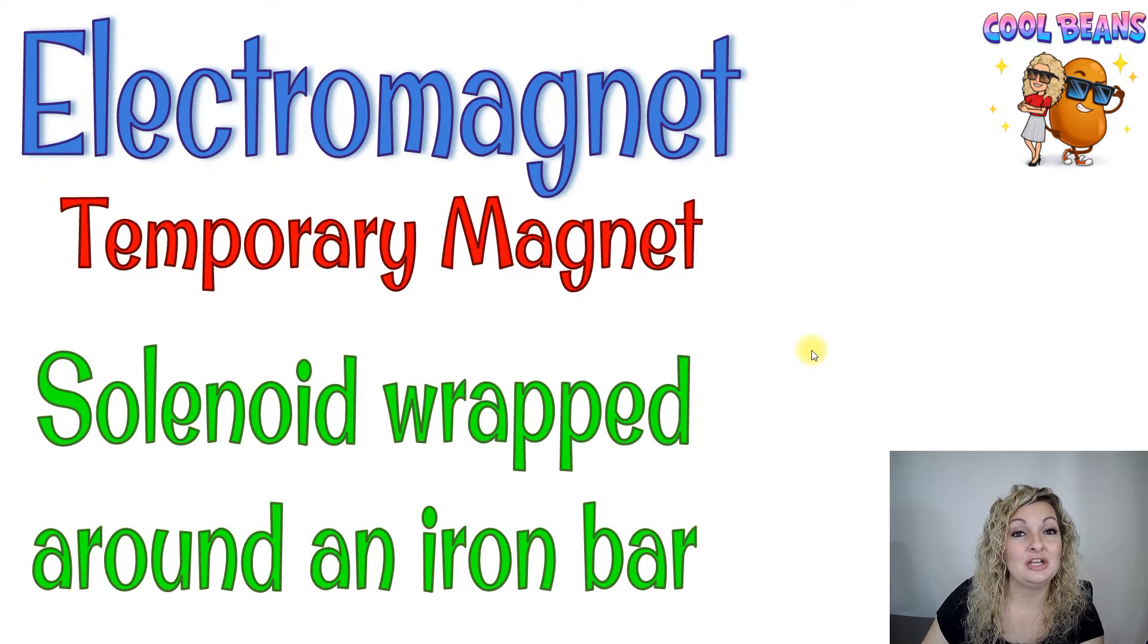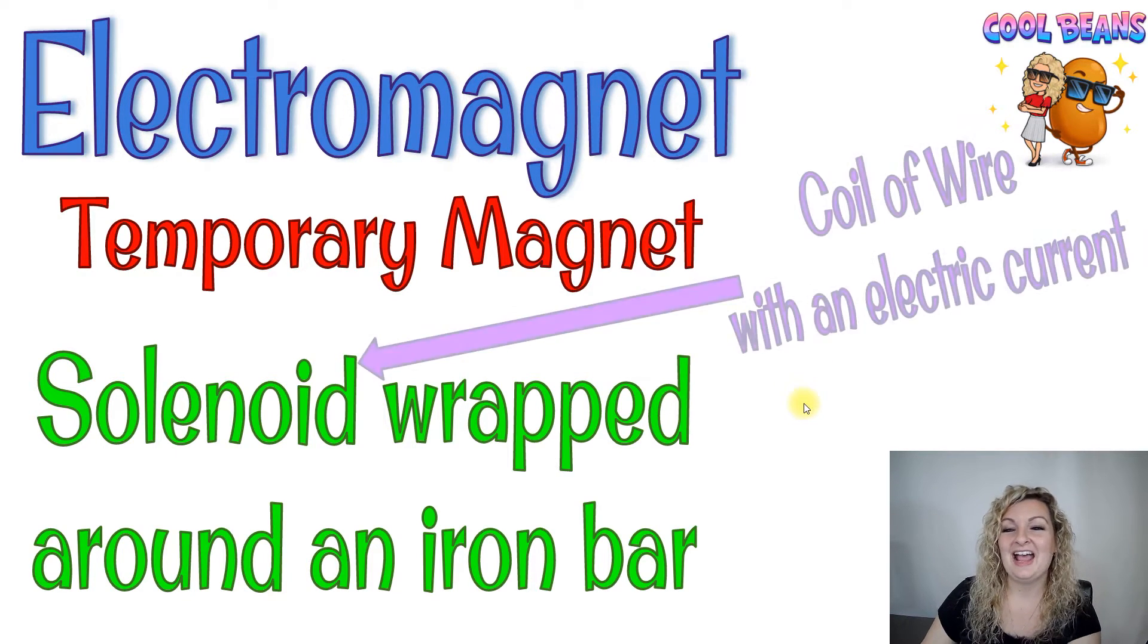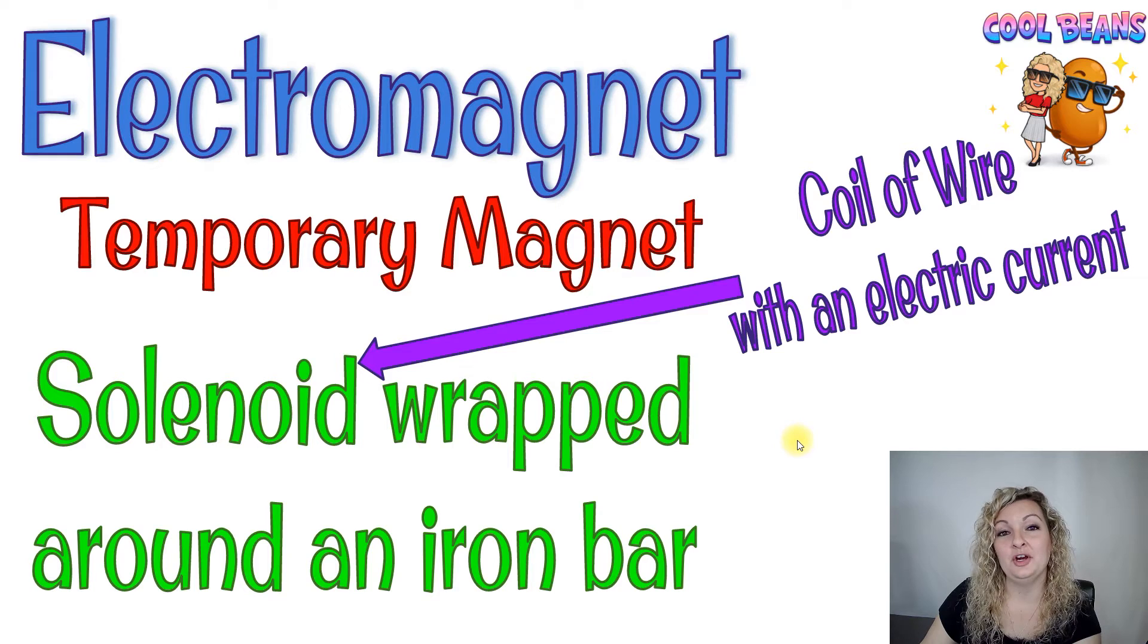It's just going to be a solenoid wrapped around an iron bar. You may think, what is a solenoid? A solenoid is just a coil of wire with an electric current. Let me show you how this happens with our setup.